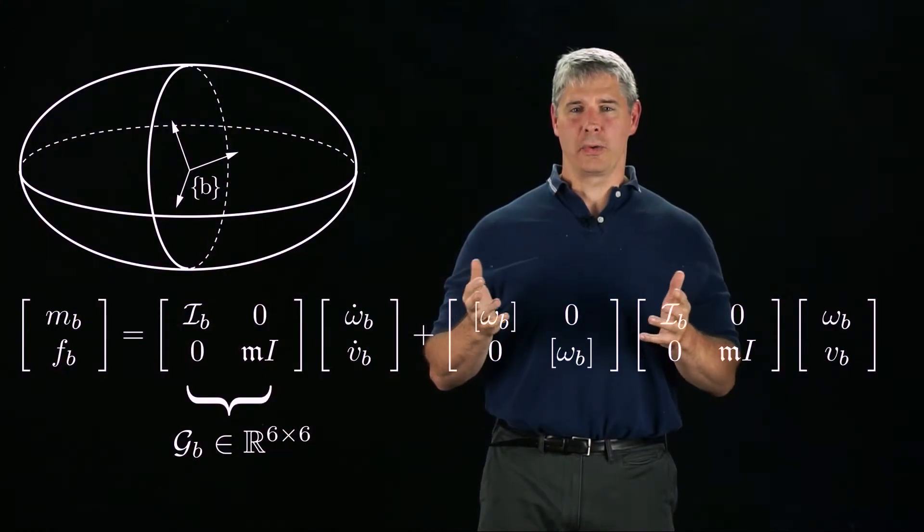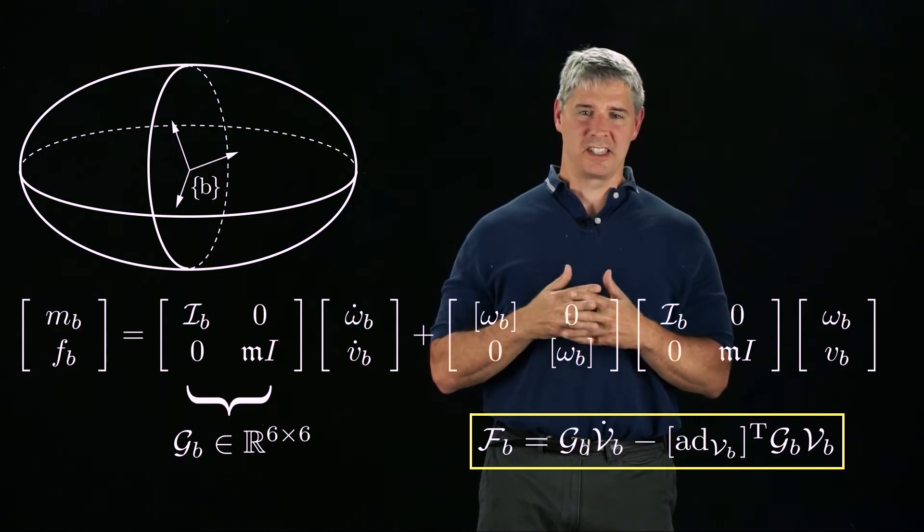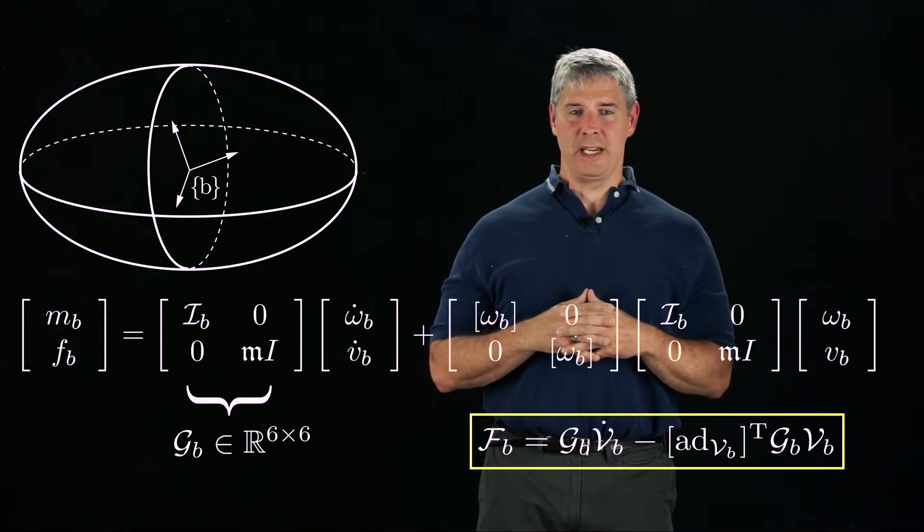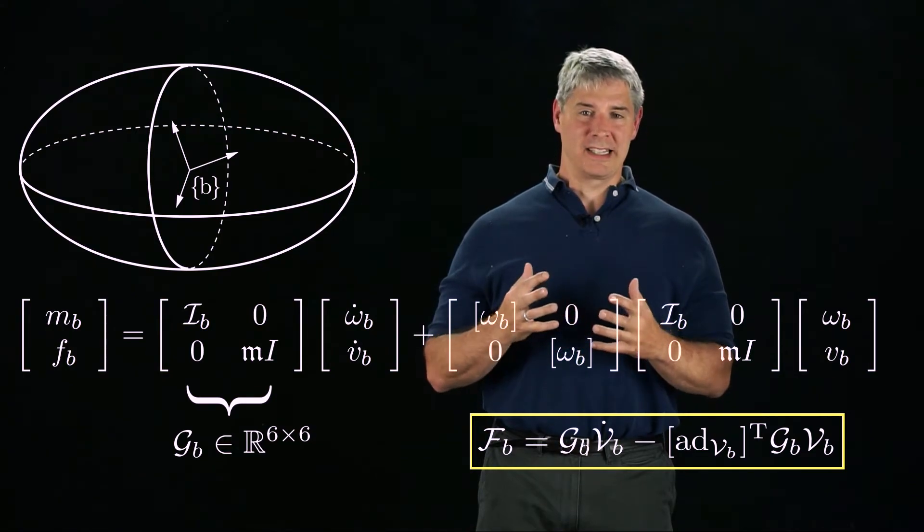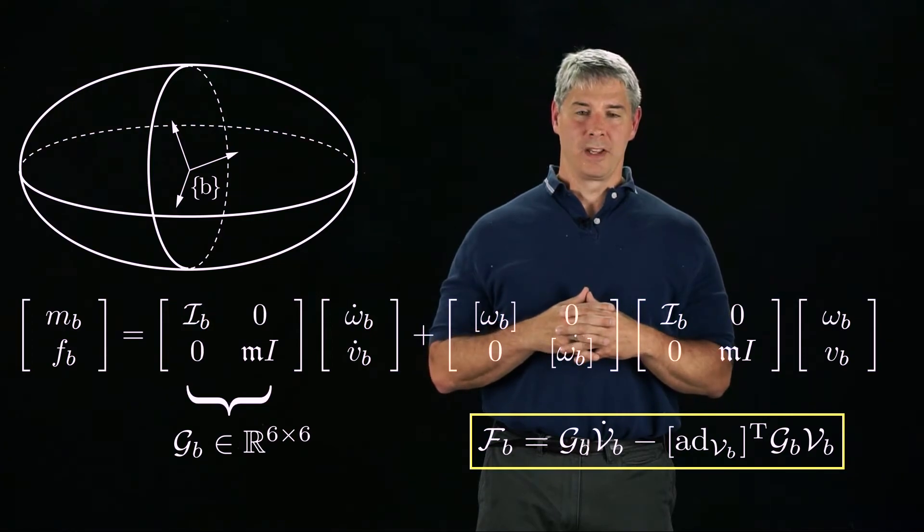Returning now to our equations of motion, after a little manipulation, we find that these equations can be expressed as this 6-vector equation. The wrench FB equals GB times VB dot minus little ad VB transpose times GB times VB. Notice that the second term is a velocity product term.